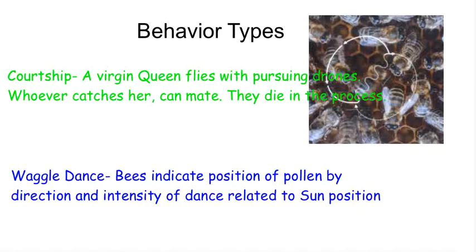Another behavior is the waggle dance, which looks something like this — they spin around in a figure eight. The intensity of the waggle and the direction tells the position of the pollen in relationship to the sun, so the other bees can go off and get it.